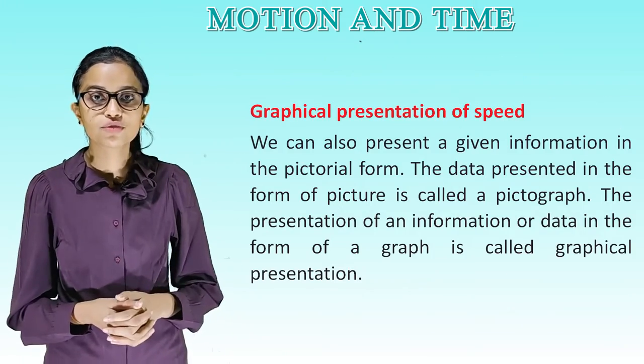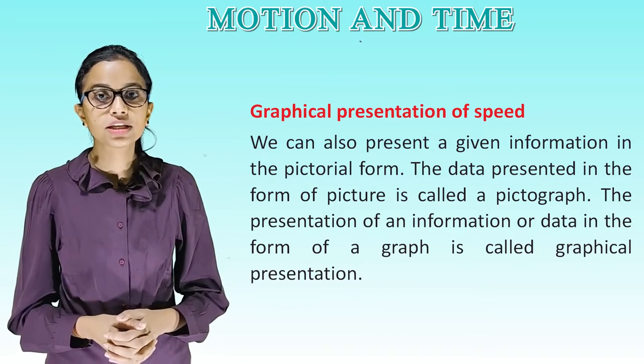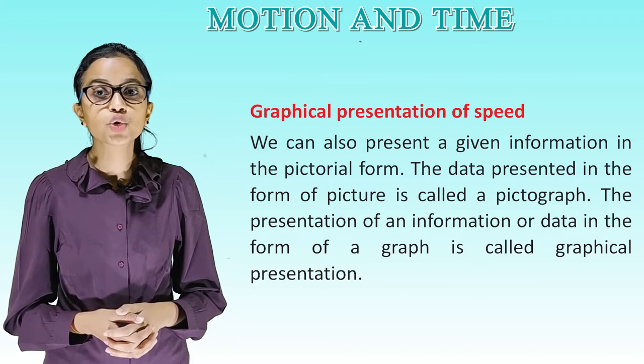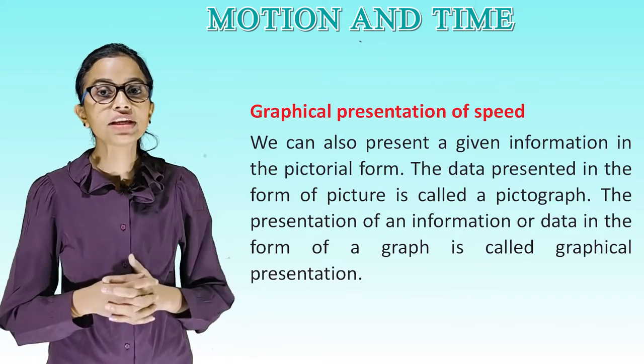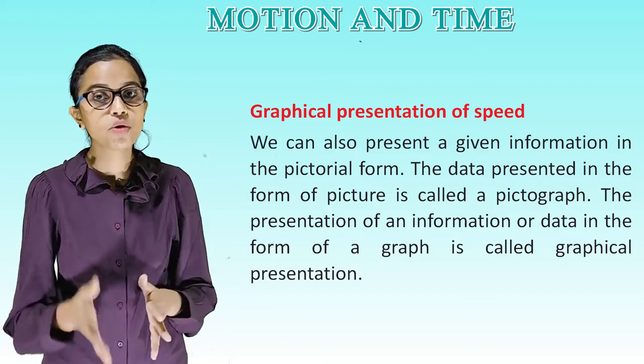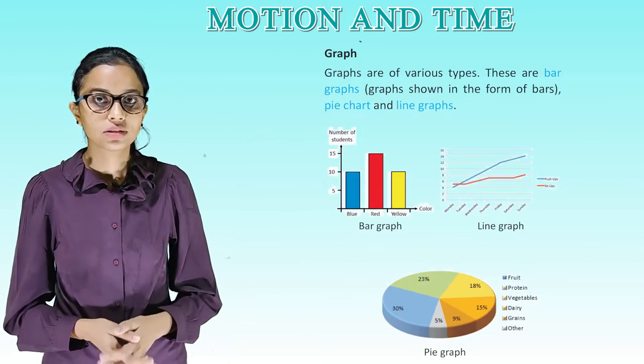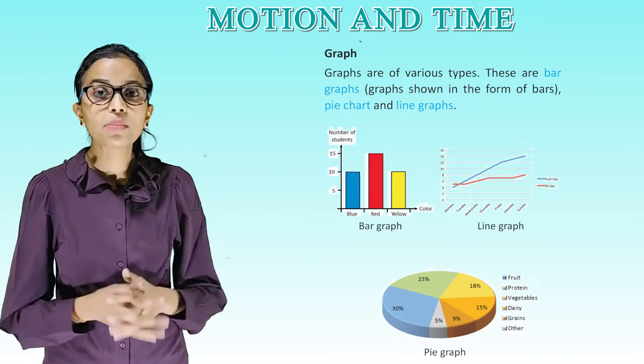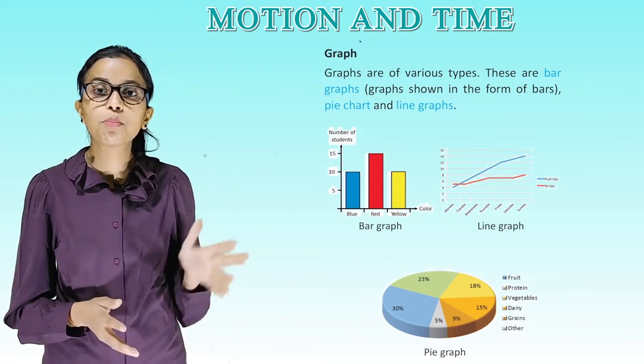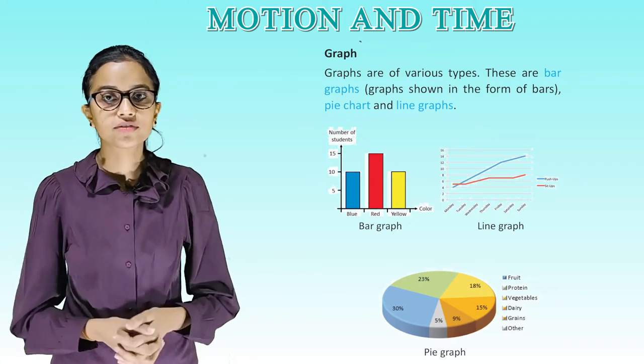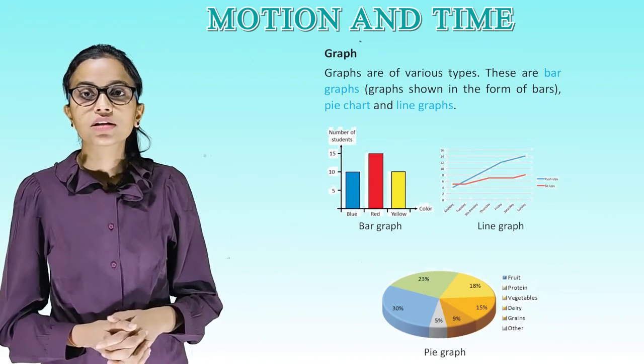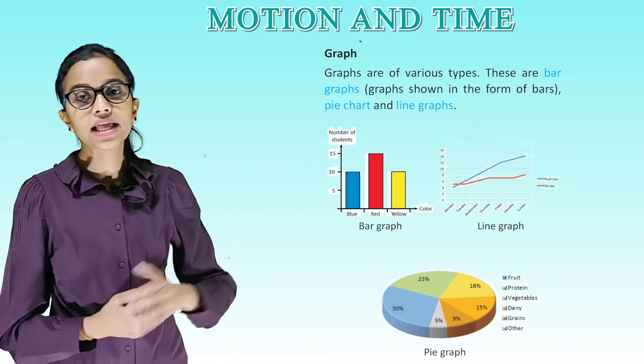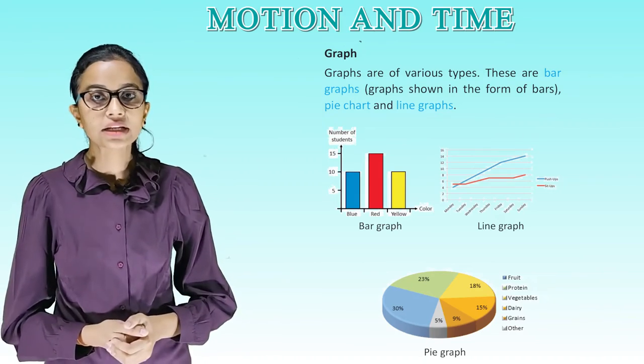Graphical presentation of speed. We can also present a given information in the pictorial form. The data presented in the form of picture is called a pictograph. The presentation of an information or data in the form of a graph is called graphical presentation. Graphs are of various types. These are bar graphs, graphs shown in the form of bars, pie chart and line graph. These are the types of graph. The first one is bar graph, the second one is line graph, and the third one is pie graph.